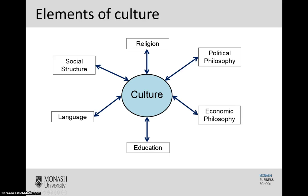In this video, we're going to have a look at the different elements of culture. As you can see from the diagram here, there are quite a few. Given that over the last few weeks we've already covered political and economic philosophies of nations and societies, we're going to leave them out for this week and instead focus on the remaining four: social structures, religions, language, and education.